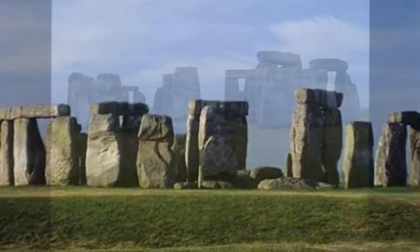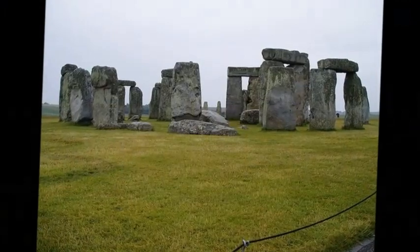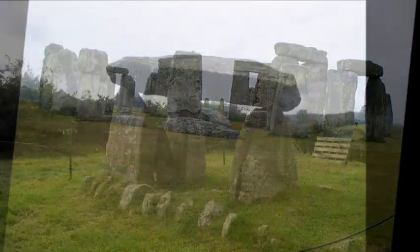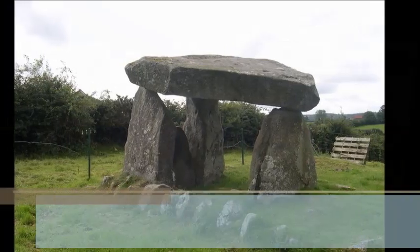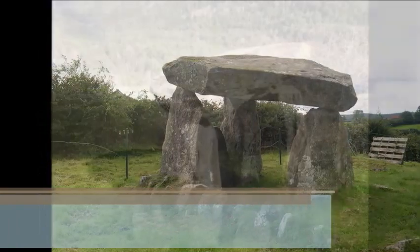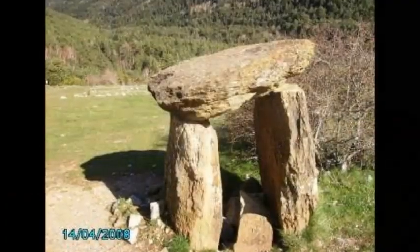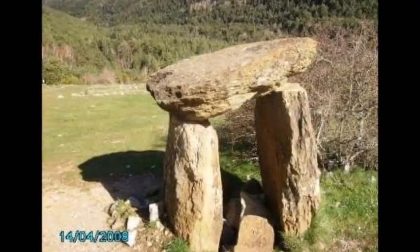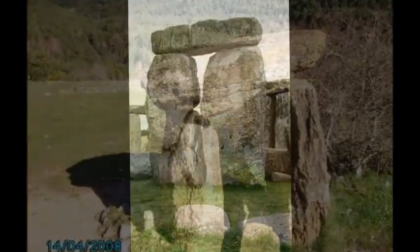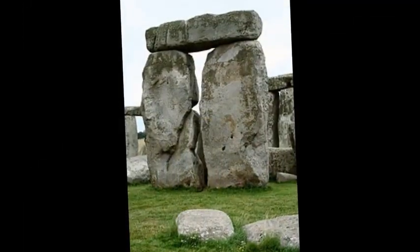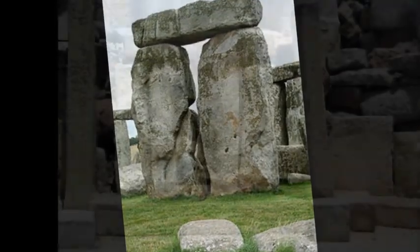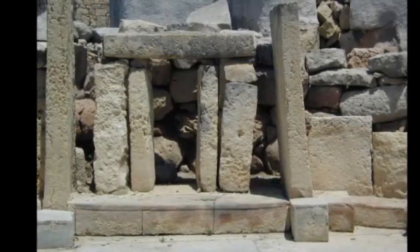Este monumento se cree que corresponde a una especie de rito al sol. Otro monumento era el dolmen, que estaba formado por piedras verticales, como paredes, y una sola piedra en forma horizontal, como techo. Era una sepultura colectiva que consta en su interior de un corredor formado por grandes piedras que precede a la cámara funeraria.